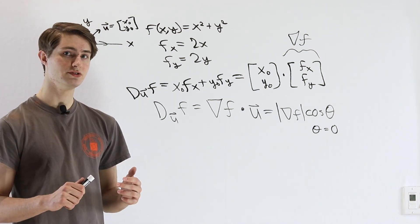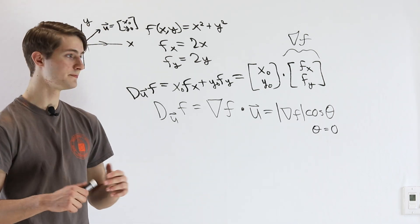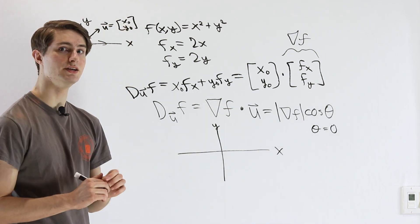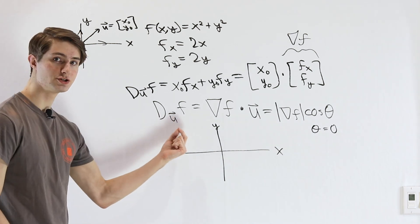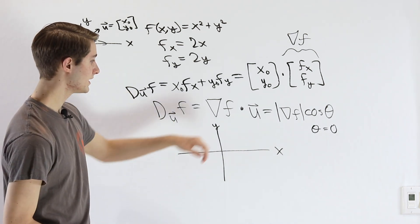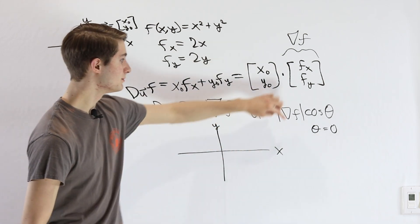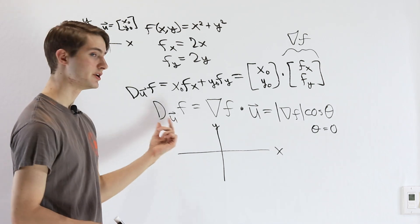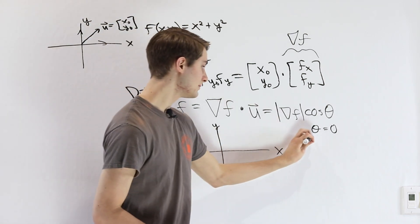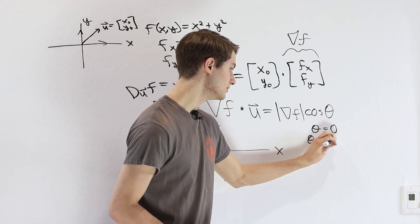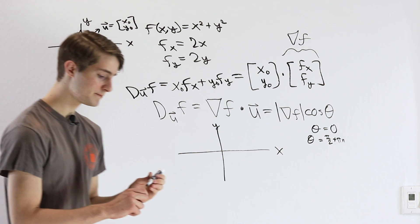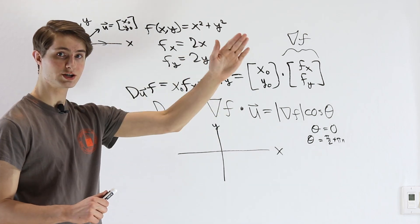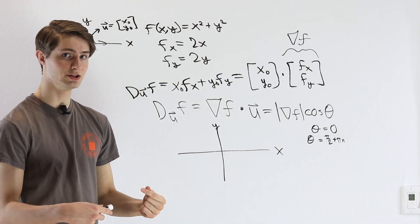That fact has applications in places like neural networks when we look at the idea of gradient descent. Another important question is: what direction should we move in to make the directional derivative equal to 0? We can't control the gradient of f, but we can control theta. We need cosine of theta to equal 0, which happens when theta equals π/2 plus some multiple of π — meaning the unit vector is exactly perpendicular to our gradient.